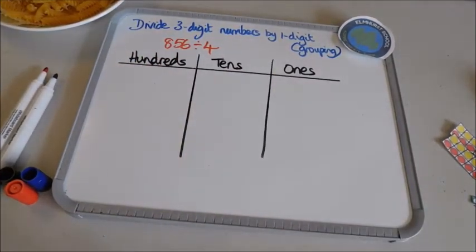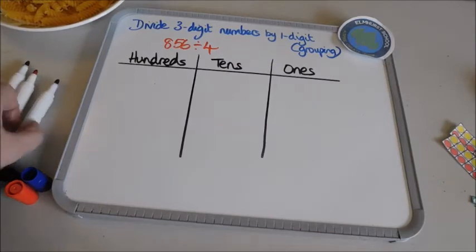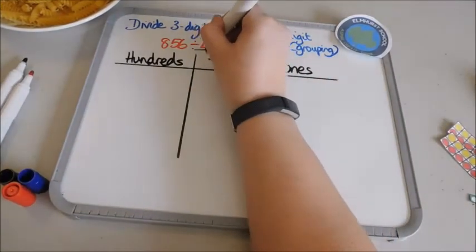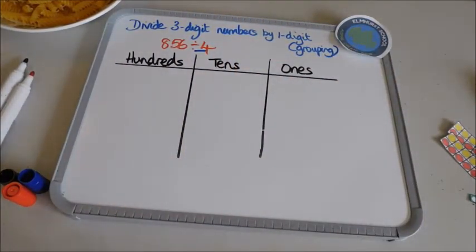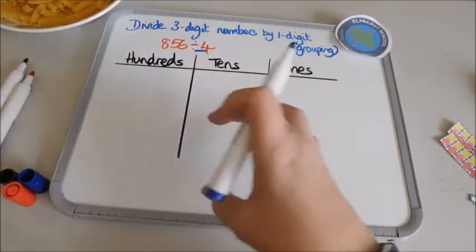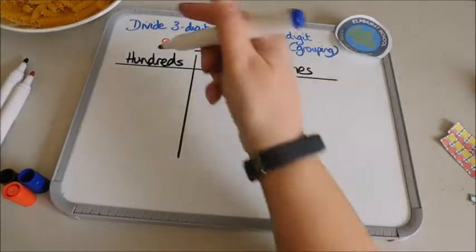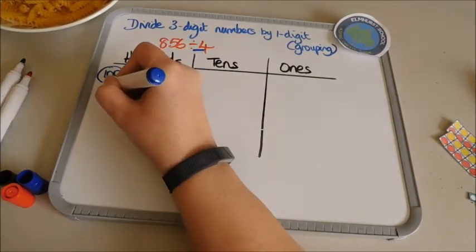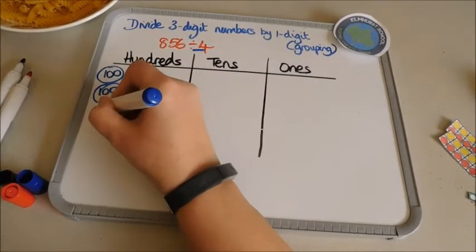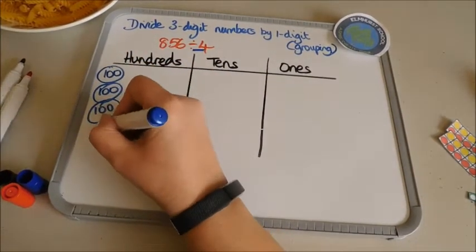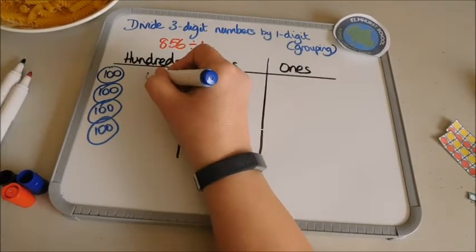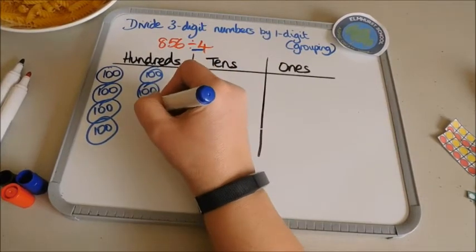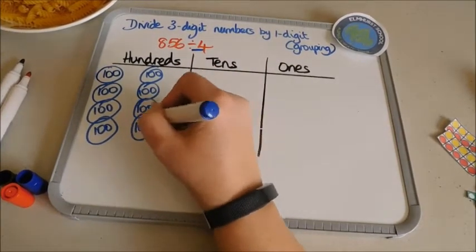Thinking about the fact that I am dividing by four, when I draw my place value counters I kind of want to put them in two fours straight away. So my 800: 100, 200, 300, 400, 500, 600, 700, 800.